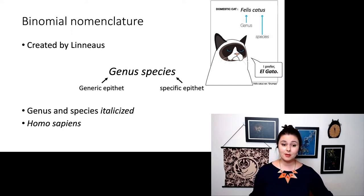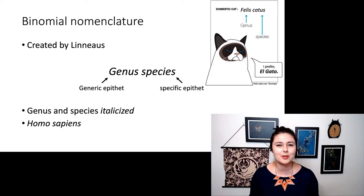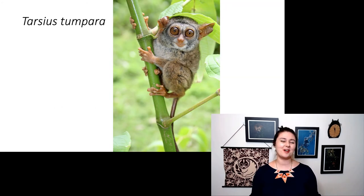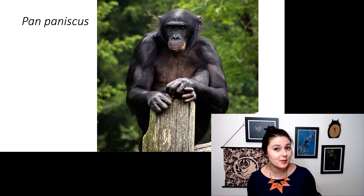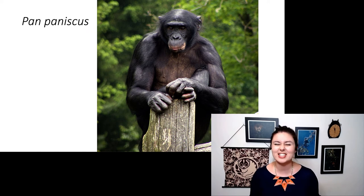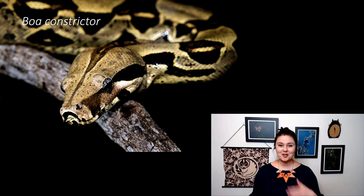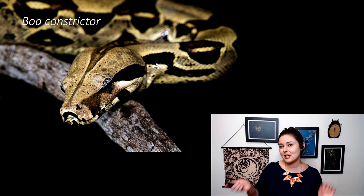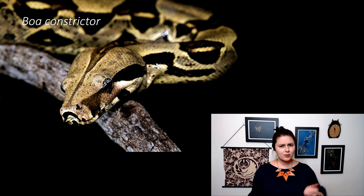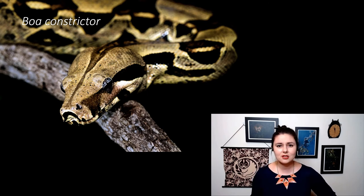An example is Homo sapiens, or our cat up here — it is Felis catus. Here we have Tarsius tupara, the Siau Island tarsier, which has a really pretty white face. Then we have Pan paniscus, our bonobo — there are other species within the genus Pan, but this one is specifically the species paniscus. One of my favorites is the boa constrictor, which is special because it is the only species where the common name and the scientific name are exactly the same.